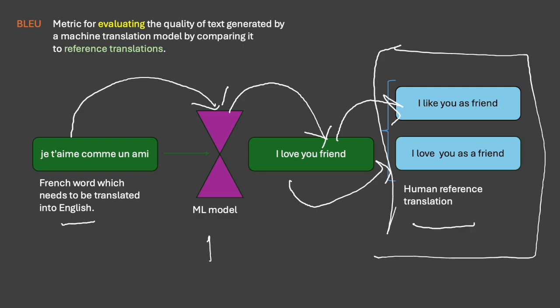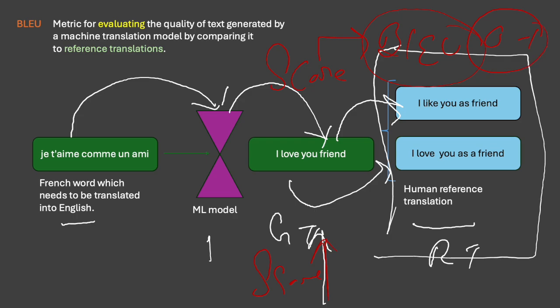When we compare this generated translation to a reference translation, we try to assign this translation a score. That score is called the BLEU score, and this BLEU score ranges from 0 to 1. There are certain issues with this BLEU score as well — it does not consider meaning, fluency, or diversity in the text. It works best when multiple reference texts are available, and it is less effective for open-ended text generation like chatbots or story generation. But for one-to-one translation, the score is really effective.